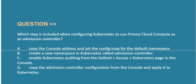Next question: Which step is included when configuring Kubernetes to use Prisma Cloud Compute as an admission controller? Option A: copy the console address and set the config map for the default namespace. Option B: create a new namespace in Kubernetes called admission controller. Option C: enable Kubernetes auditing from the Defend Access Kubernetes page in the console. Option D: copy the admission controller configuration from the console and apply it to the Kubernetes. Correct answer is Option D.